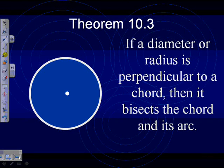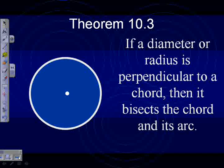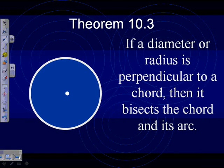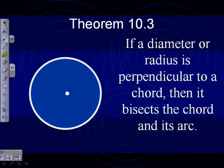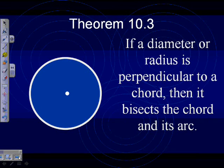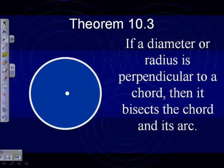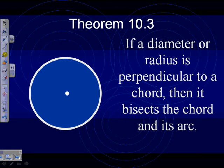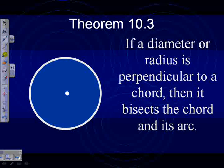This is one that I think is pretty cool just because it works. It's one of those things you probably never thought about it before, but it is a rule that fits any circle as long as it has this given condition. If a diameter or radius is perpendicular to a chord, then it bisects the chord and its arc.